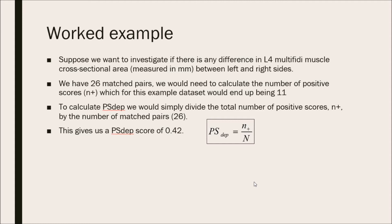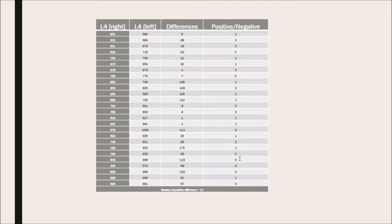To discuss how we can calculate that N-plus, here's an example table. On the first column, we have the L4 multifidus on the right side, measured in millimeters. And on the next column, we have the L4 multifidus on the left side, measured in millimeters. Then, on the next column, we simply calculate the differences between these scores. So, 601 minus 592 gives us 9. Now, this would be a positive score, so we add 1 to our N-plus score. And then we continue doing it for each matched pair. And then for each positive difference we find, we add 1 to the N-plus. And for this data set, we end up getting a total number of positive differences of 11, so our N-plus score would be 11.